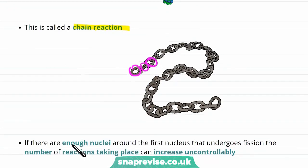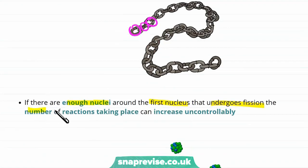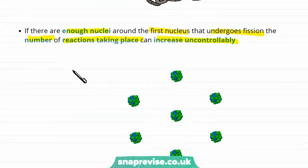If there are enough nuclei around the first nucleus that undergoes fission, the number of reactions taking place can increase uncontrollably. So we have our first nucleus here which undergoes fission and emits a few neutrons. Each of these nuclei then emit more neutrons. We started off with one of these nuclear fissions. But this nuclear fission was able to cause another two or three reactions. If each of those then causes another two or three, then the number of reactions happening is going to increase and increase and increase.